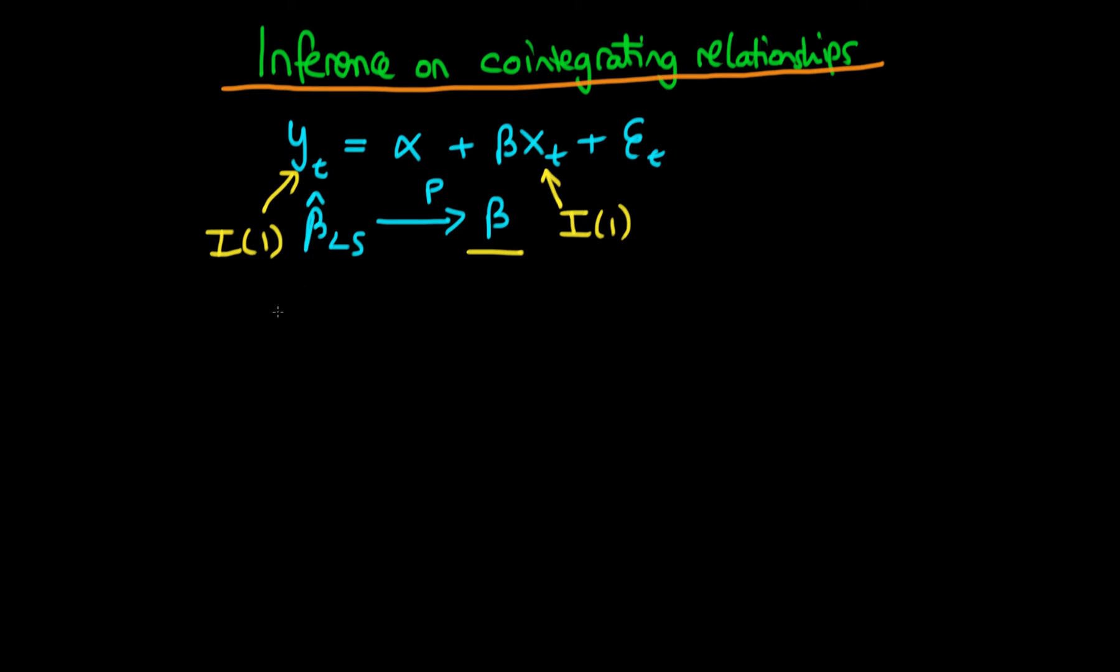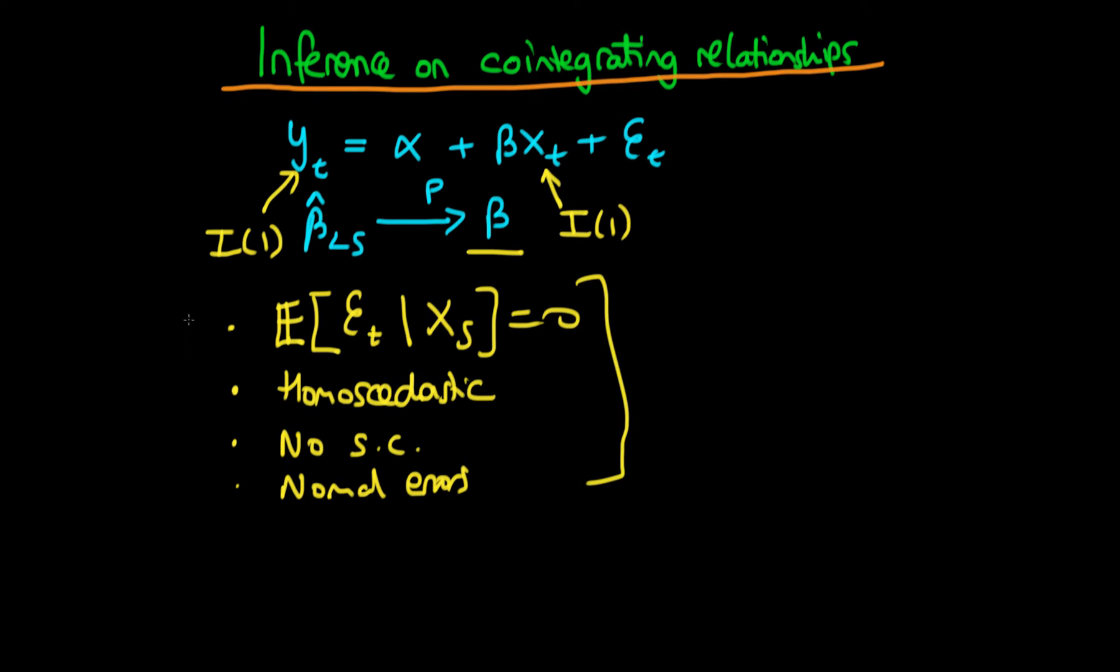But all is not lost because remember that if it is the case that we have the strict exogeneity assumption upheld, so that means that the expectation of et given xs equals zero, if we assume that, if we also assume that we have homoscedastic errors so that means that the variance of et is equal to a constant, if we assume that as well as having no serial correlation, and if we have normal errors, then we don't actually need to appeal to asymptotic theory.